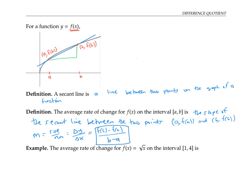To put this in context, if for example f of x represents the height of a tree, and x represents time in years, then f of b minus f of a represents a difference in height, or the amount the tree grows, and b minus a represents a difference in years, so a time period.